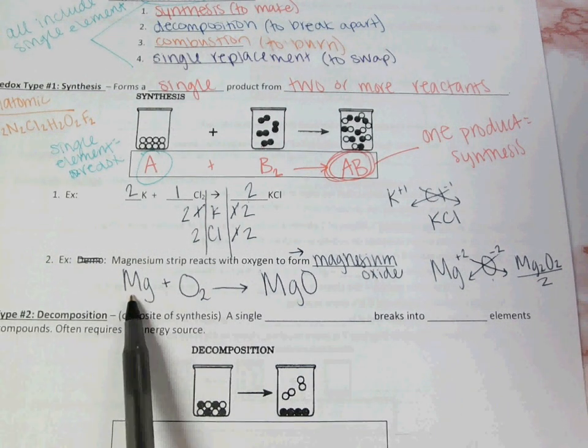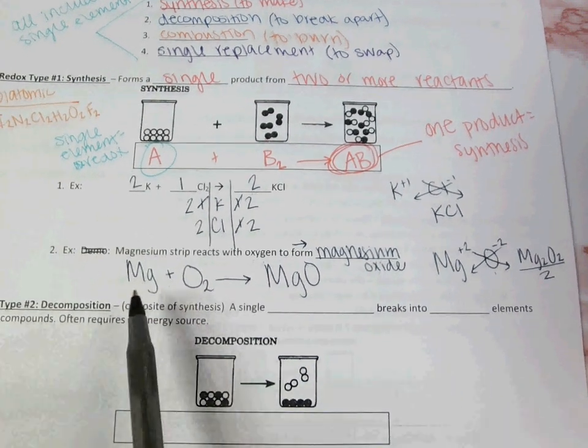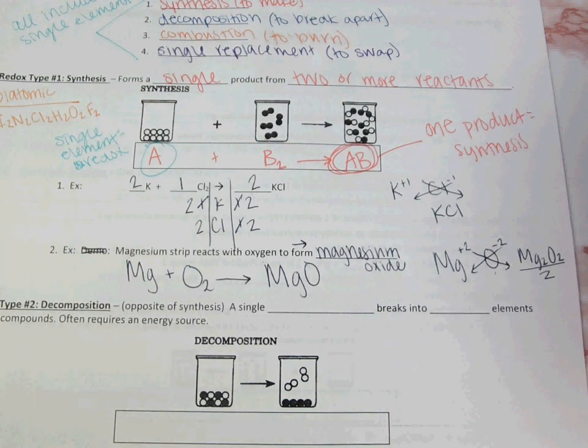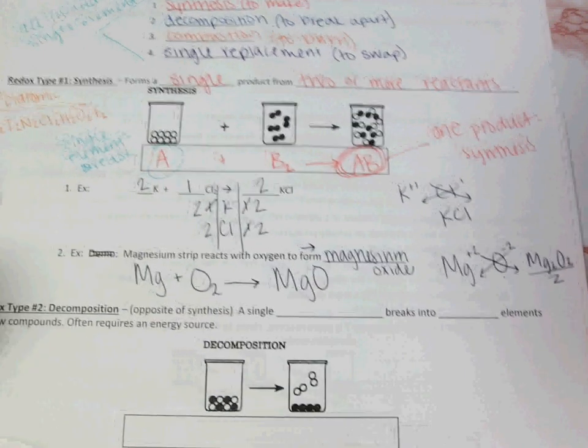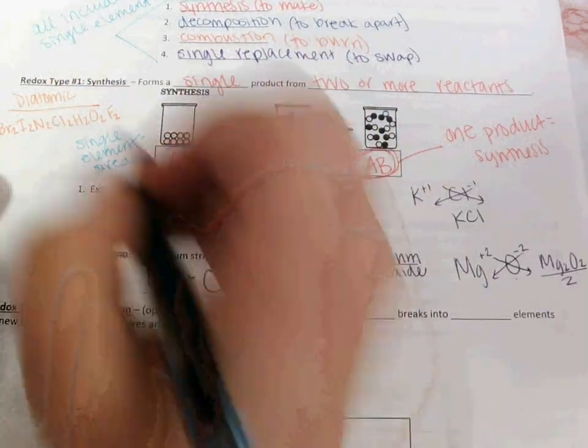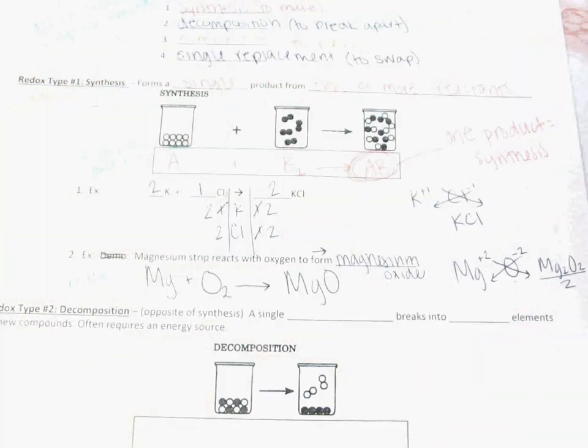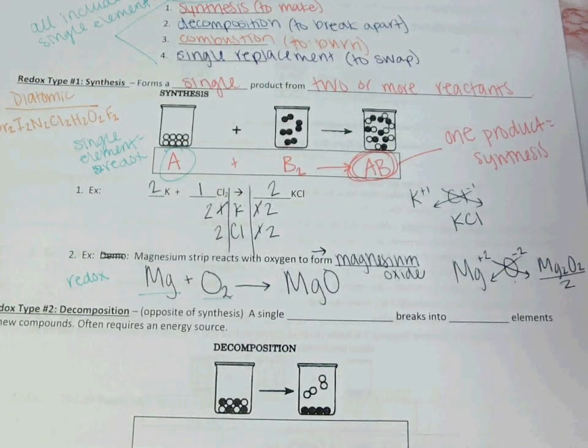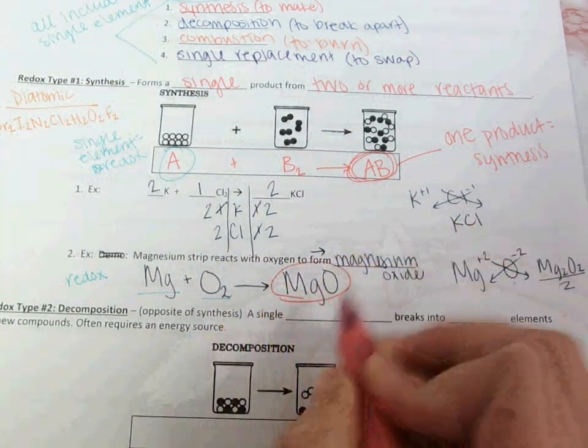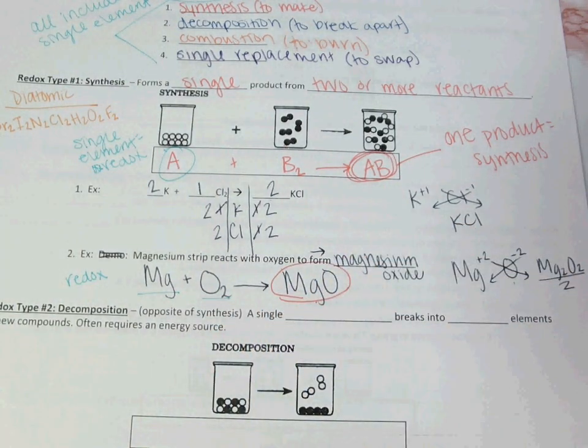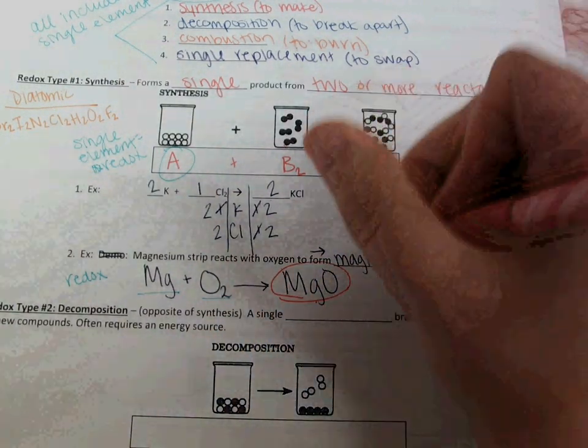Because I have a single element and another single element, I know that this is classified as a redox reaction. Single element, single element, redox. And because I have a single product, just one thing that I made, what type of reaction do we classify this as? Synthesis.